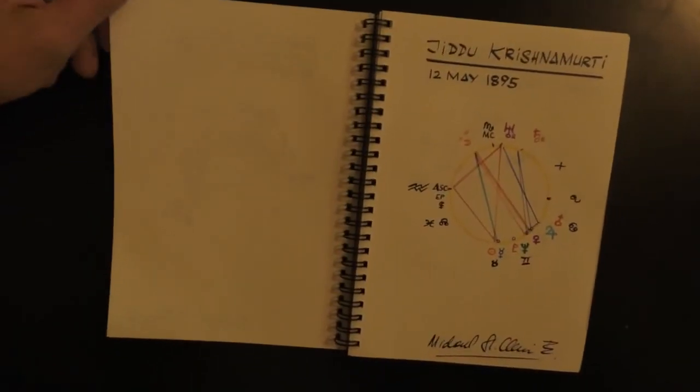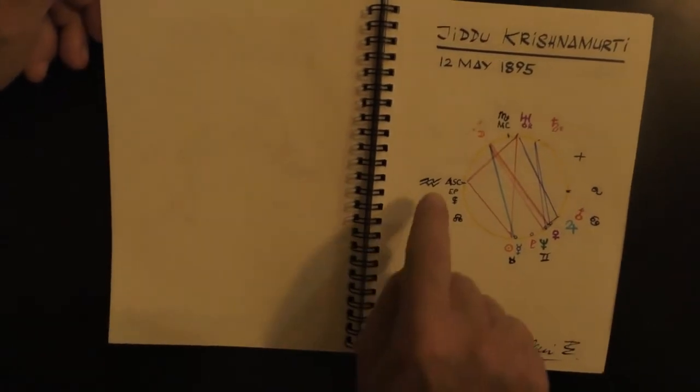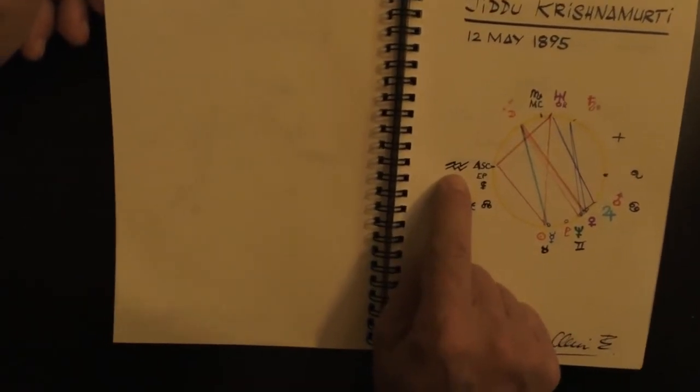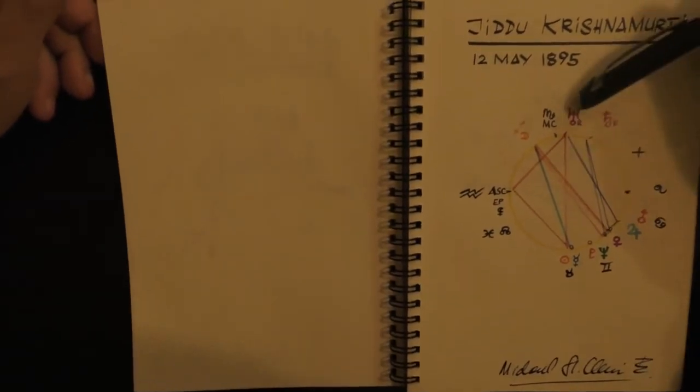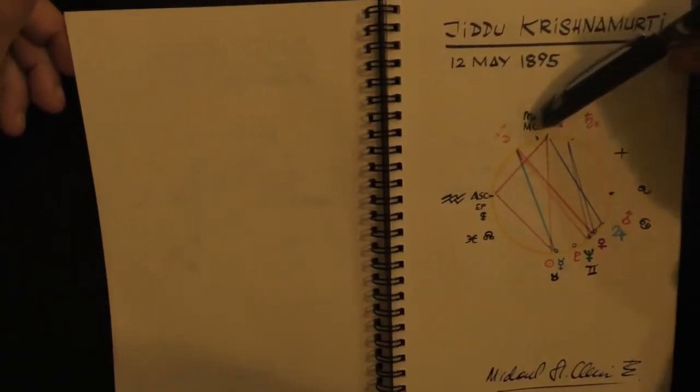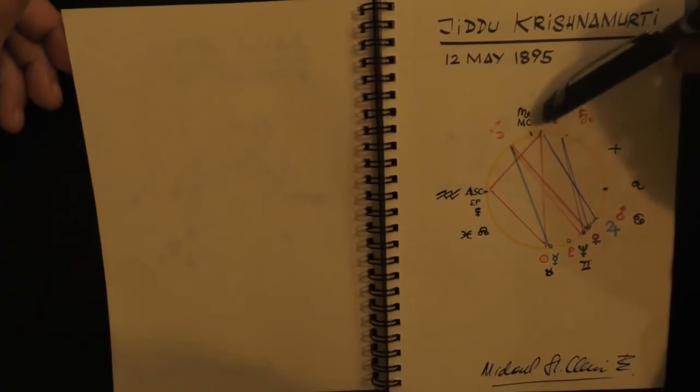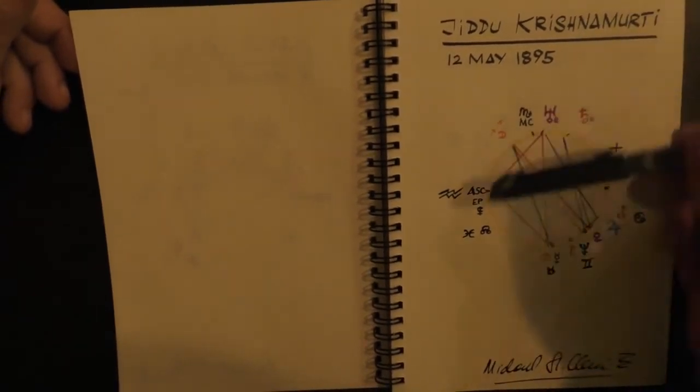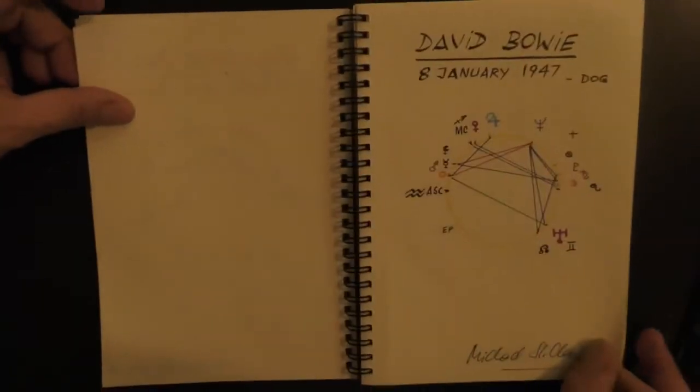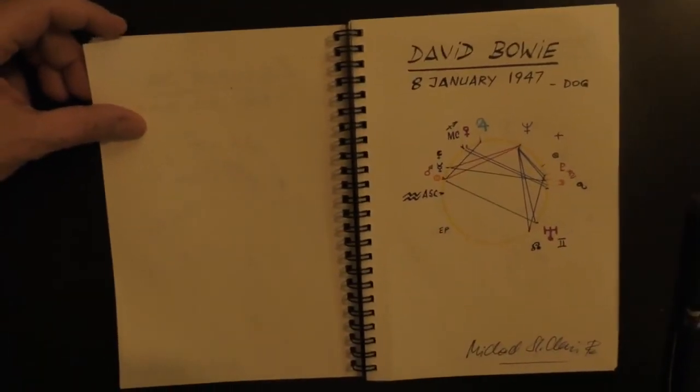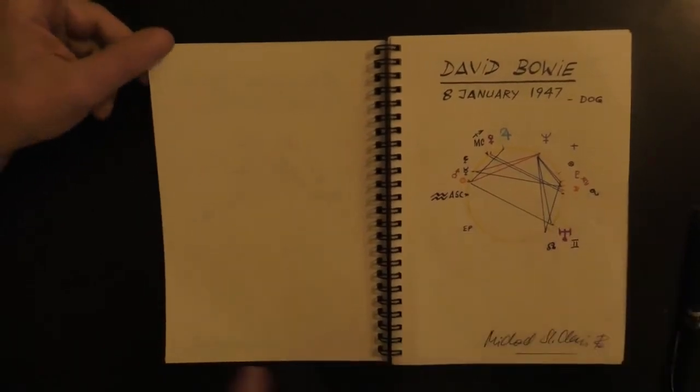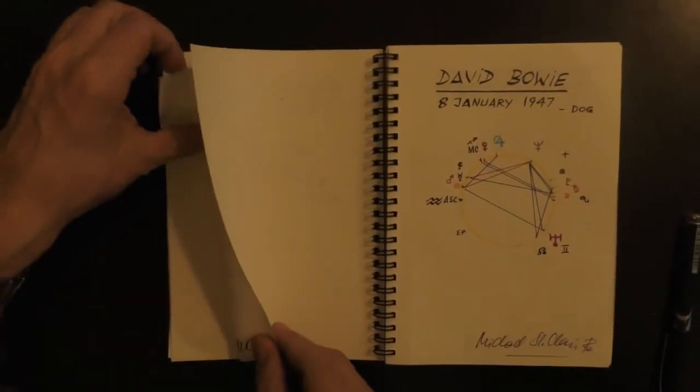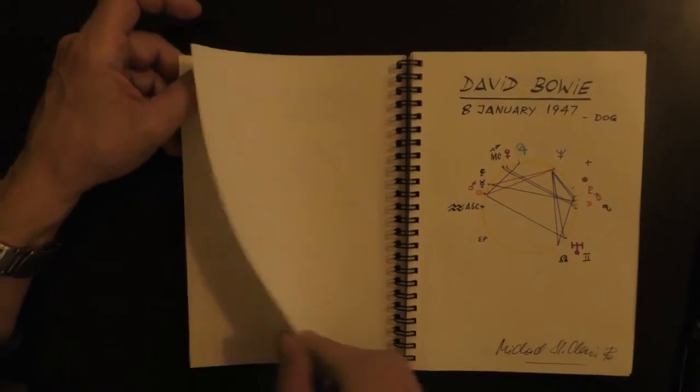And then Jiddu Krishnamurti, he's a Taurus, Aquarius rising. Moon in Leo, he has to be loved by everybody. He remained a baby, that's okay.